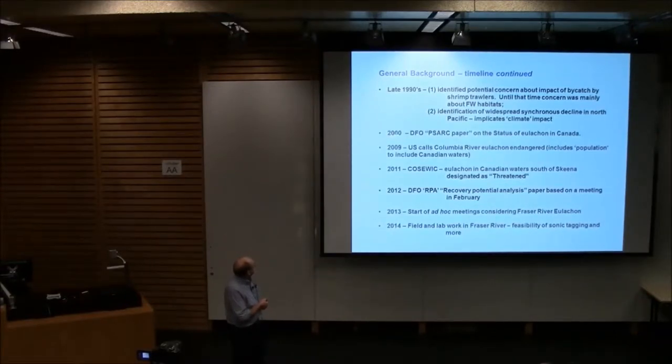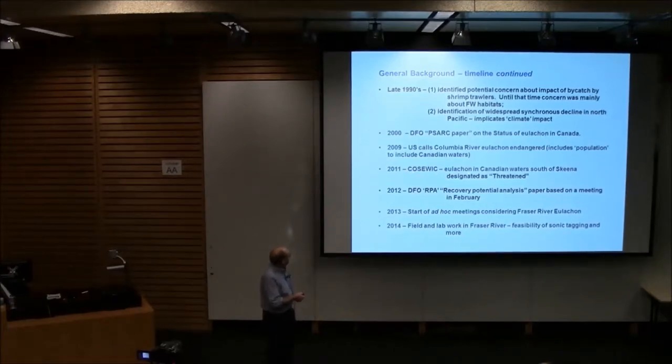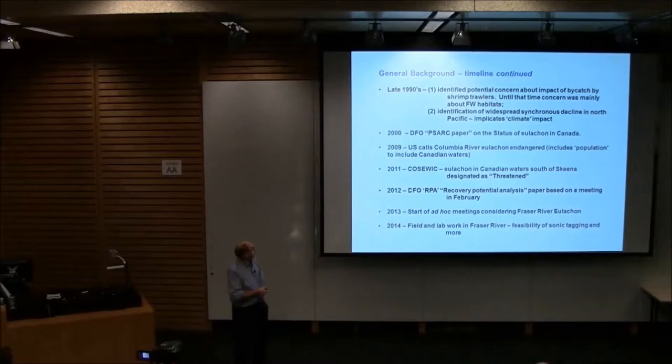At that time, everyone was concerned that if there were any negative things about hooligans, it was in the habitat, freshwater habitat. BC forests were very much involved looking at whether logging was affecting their habitat. In 2000, following all that, we wrote a PSARC paper on the status of hooligans. That was one of the first things that brought it together. In 2009, the U.S. looked at the Columbia River and called it endangered. They got going faster than we did. In 2011, the COSEWIC paper looked at all the waters. Megan Moody, a graduate of this institution, and I wrote a COSEWIC paper, and as a consequence, it was called threatened. In 2012, there's another paper called the Recovery Potential Analysis saying, what can we do about them?